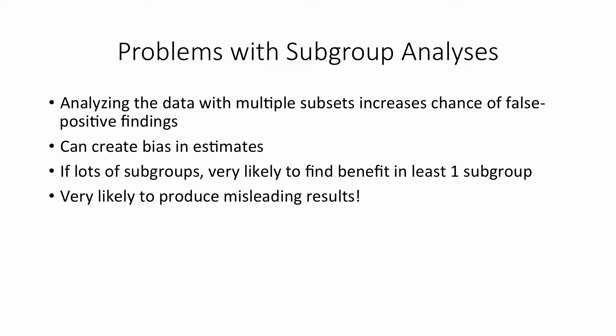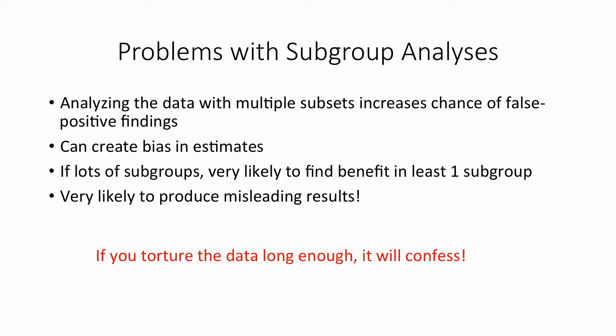It can also create bias in our estimates. In fact, if there are a lot of subgroups, I'm going to be very likely to find benefit in at least one subgroup just by chance. This means I'm very likely to produce misleading results with these types of subgroup analyses. I had a graduate professor once who said that if you torture the data long enough, it will confess — and this is very true.